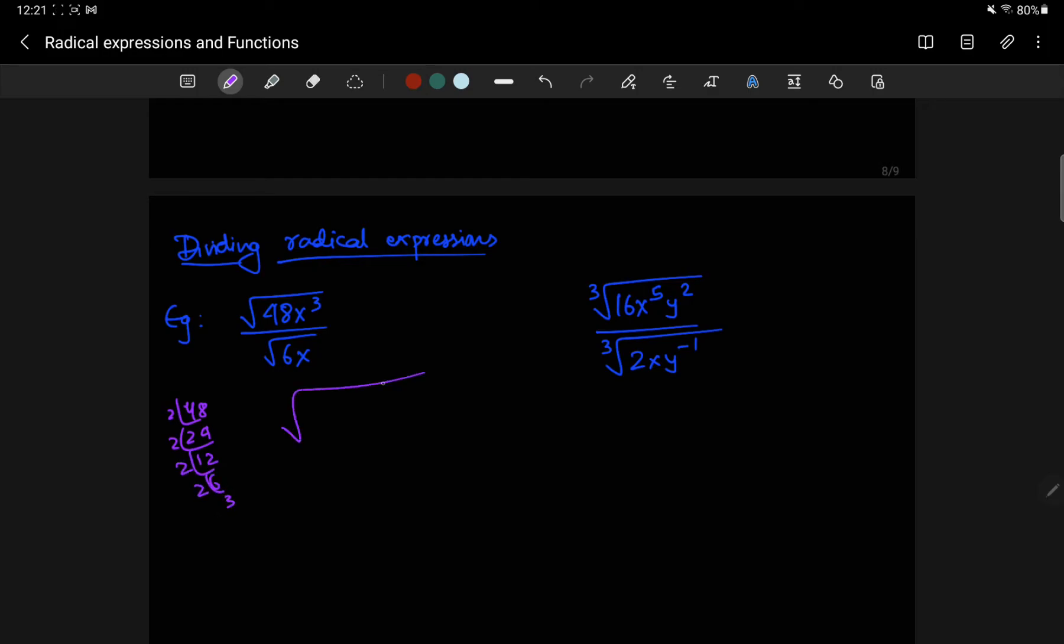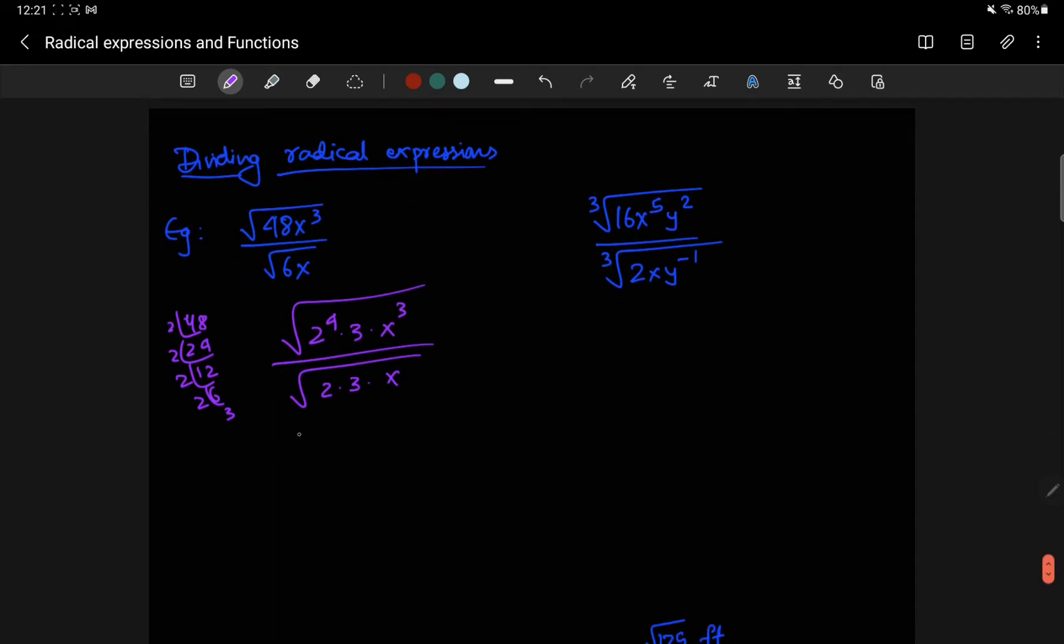So, this is 2 to the power of 4, 3, x cubed over 2 times 3 times x. This means it's 2 to the 4, 3, x cubed over 2 times 3 times x, all in the square root.